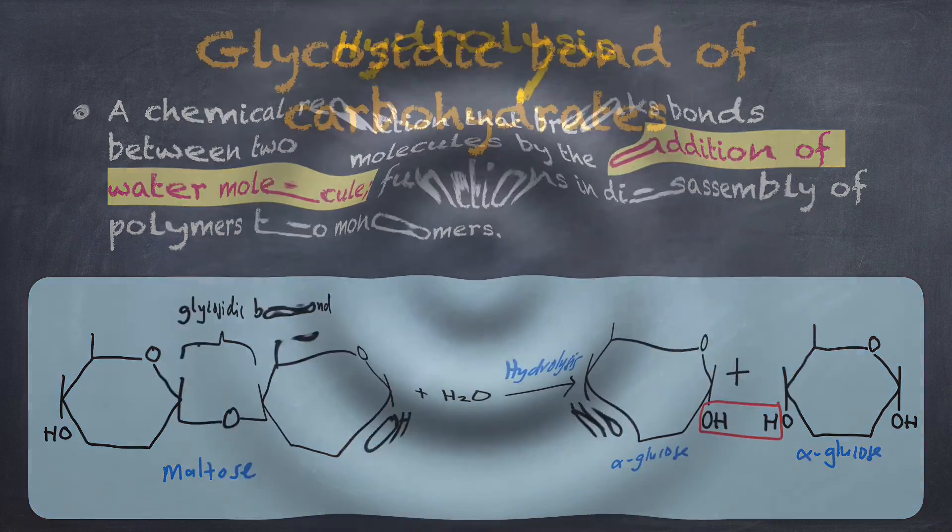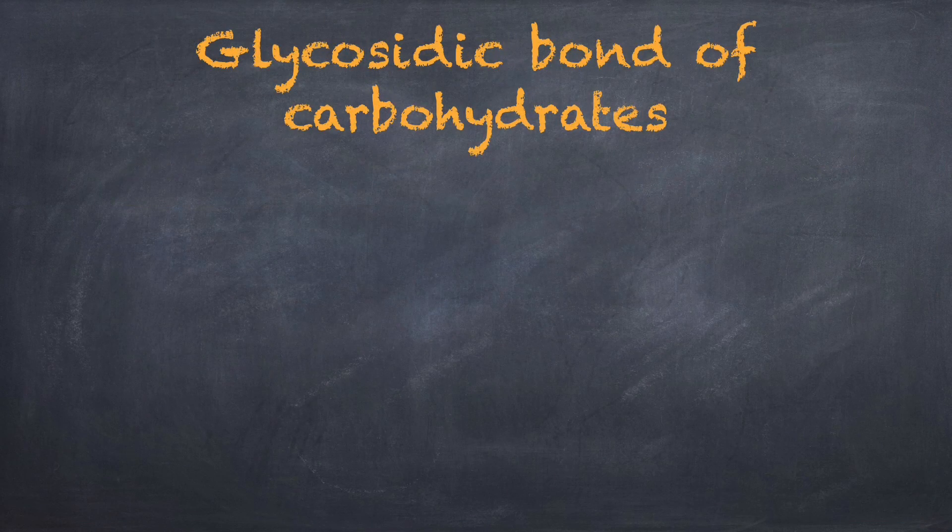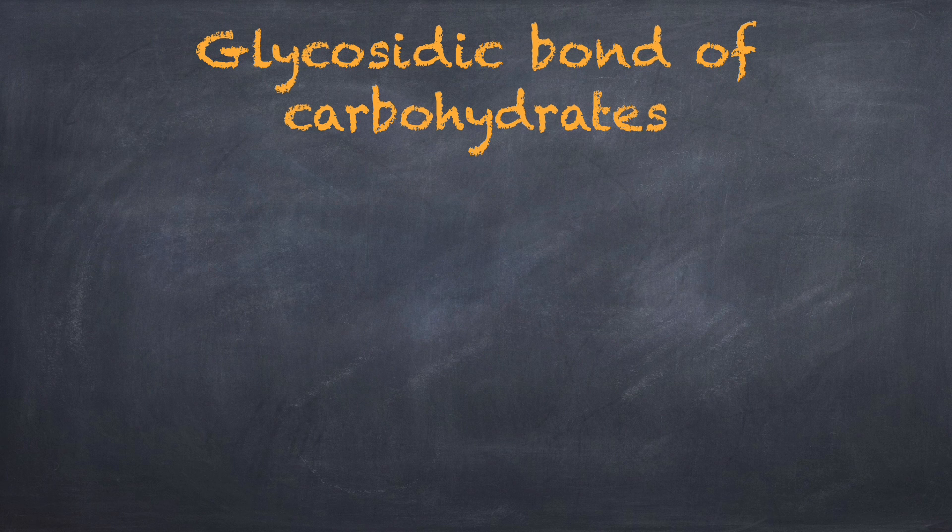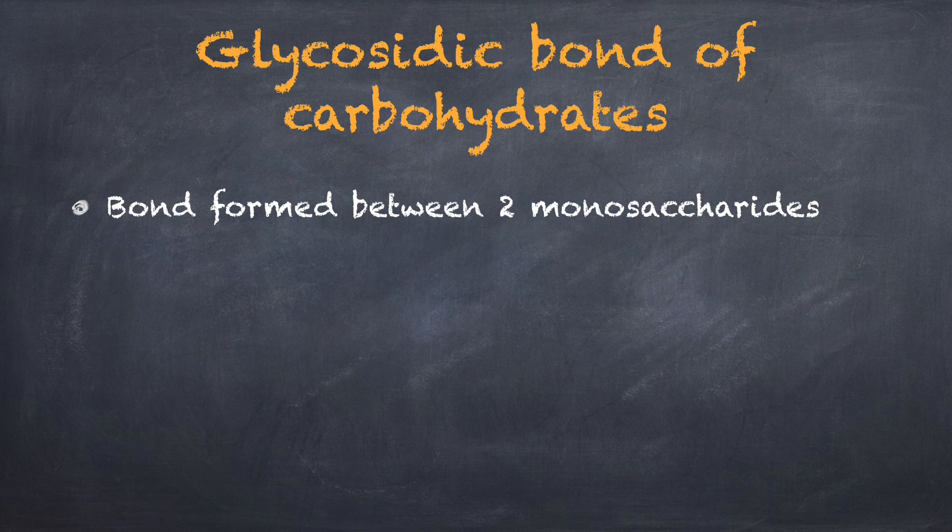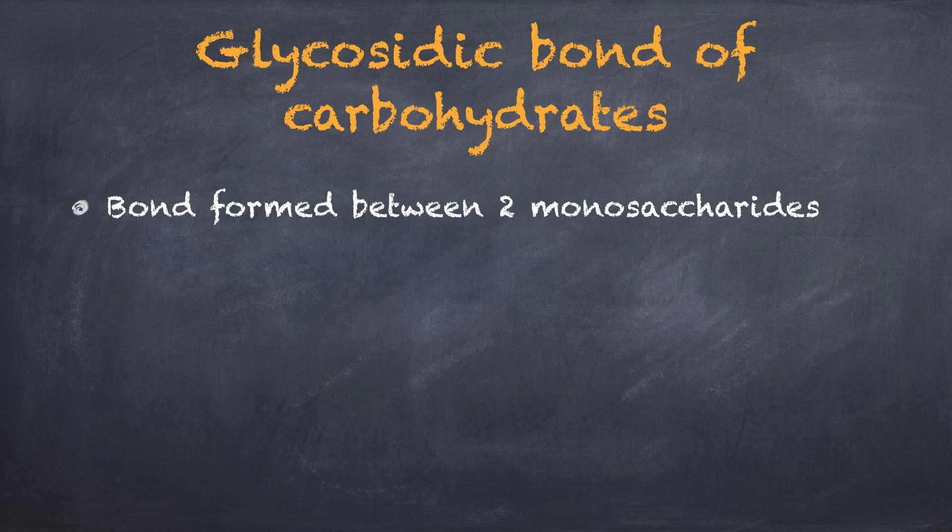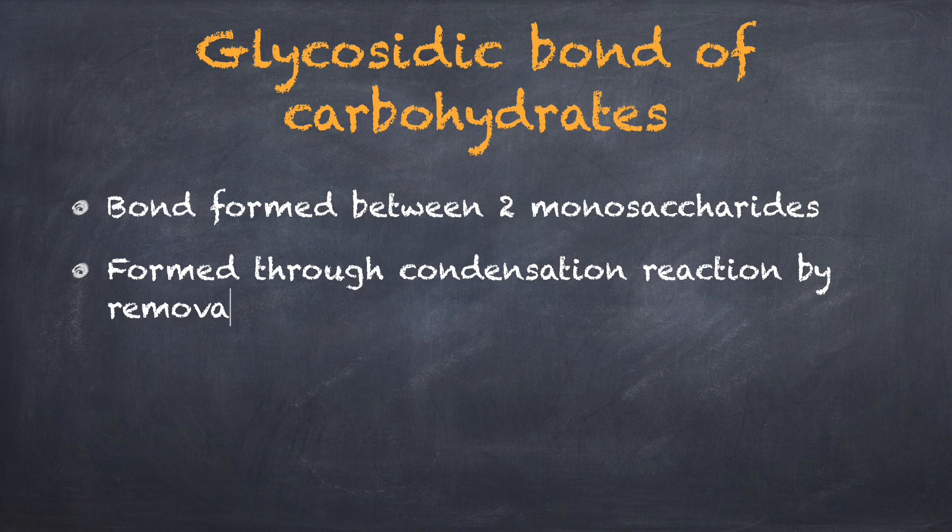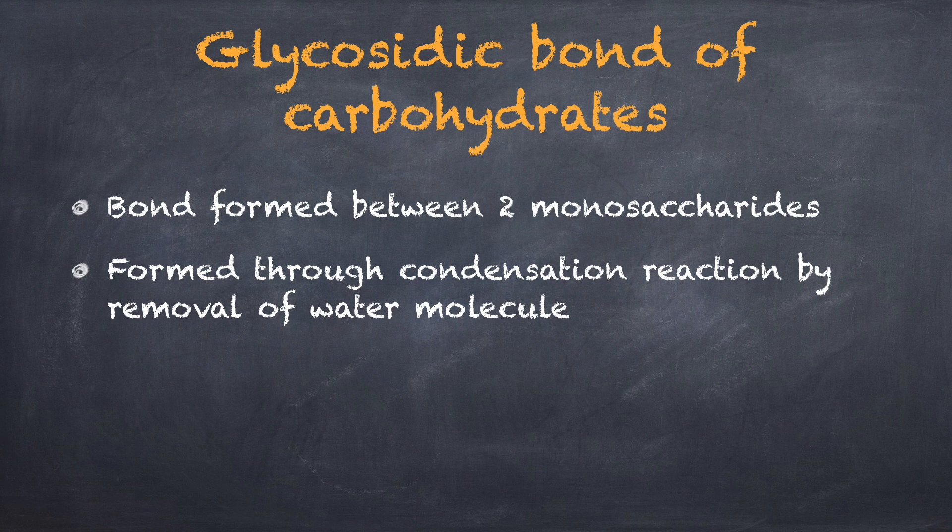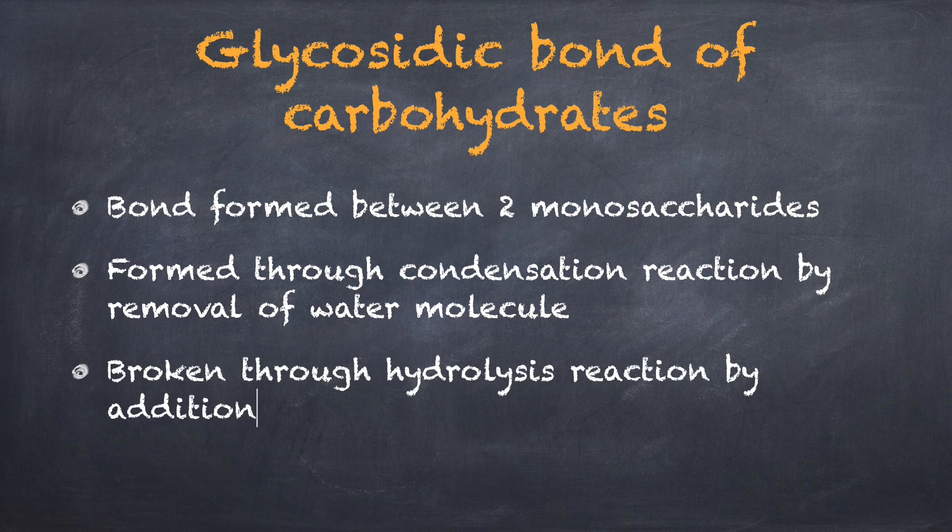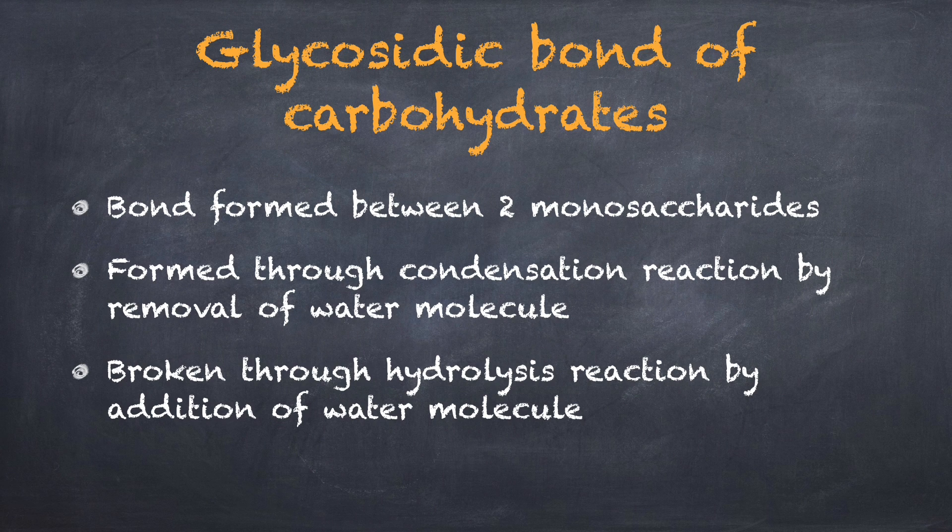And what is the glycosidic bond of carbohydrates? It is a bond that is formed between two monosaccharides. The process that forms the bond is through condensation reaction by removal of water molecule, and it is broken down through hydrolysis reaction by the addition of water molecule.